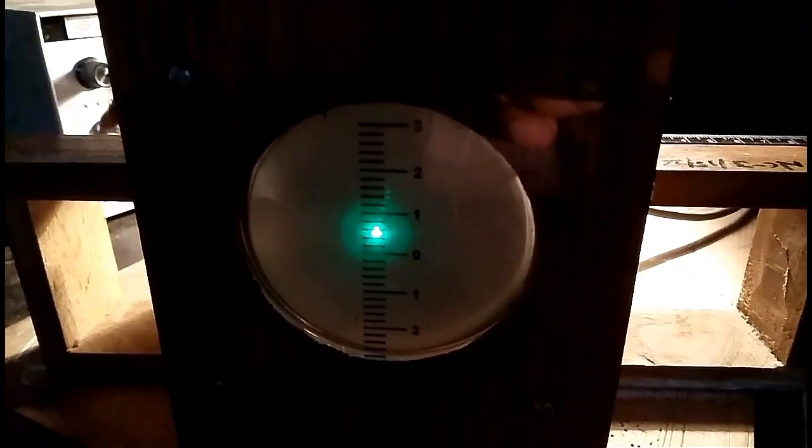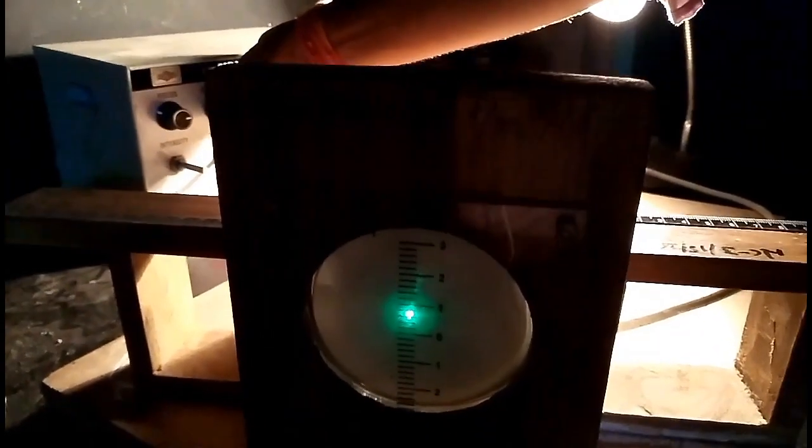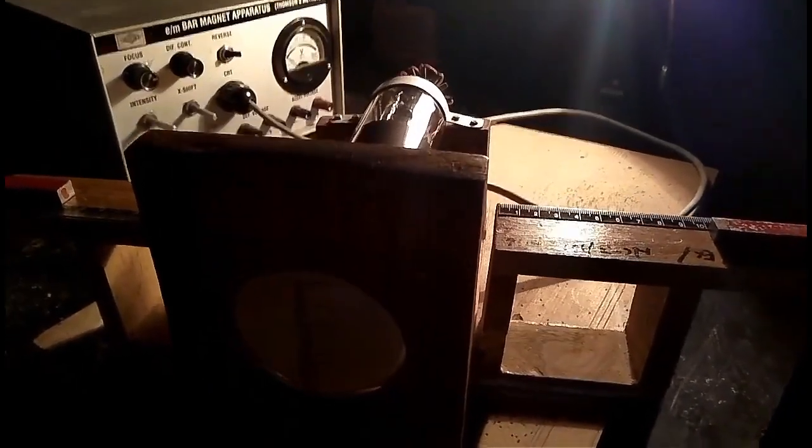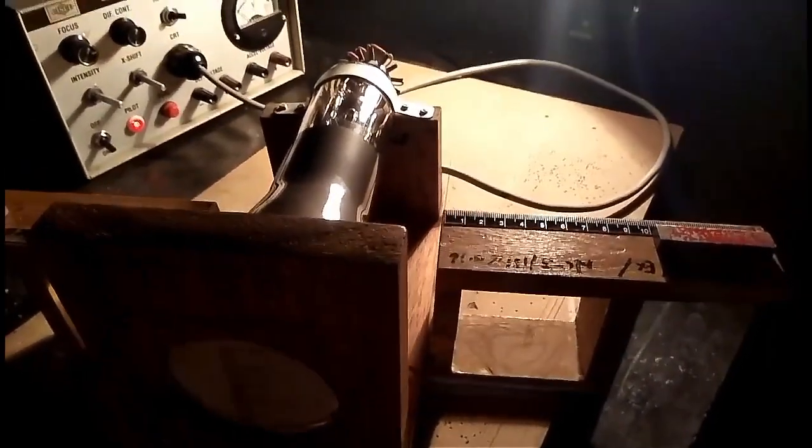We set the spot at 0 position and place the bar magnet at R1 and R2 distance at which we noted the value of equilibrium deflection.